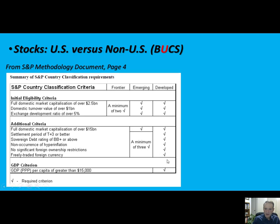Developed markets must meet all of those criteria. And then per capita — how much your economy is worth per individual — needs to be $15,000 or higher. That's a pretty high restriction for developed countries. The last time I saw China, I thought their per capita was about $7,000. Let me see real quickly if I can pull that up.